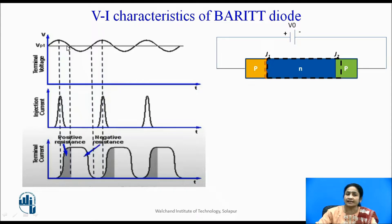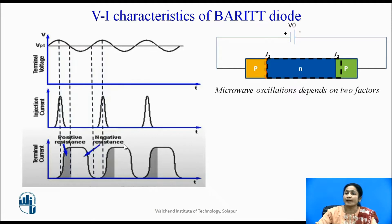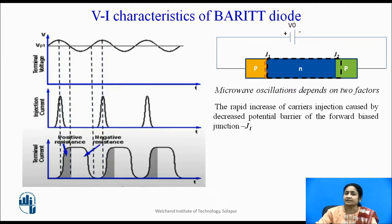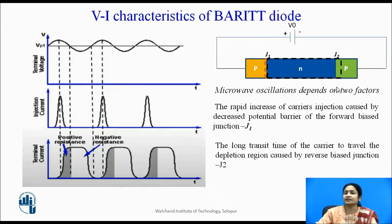During the positive half cycle, the voltage is positive and current is increasing — this is called positive resistance. Between two pulses, the current is negative while voltage is decreasing, creating negative resistance in the diode. The microwave oscillations depend on two factors: first, the rapid increase of carrier injection caused by decreasing the potential barrier of the forward-biased junction J1; and second, the long transit time of carriers across the depletion region caused by the reverse-biased junction J2. Oscillations are created due to these two mechanisms.